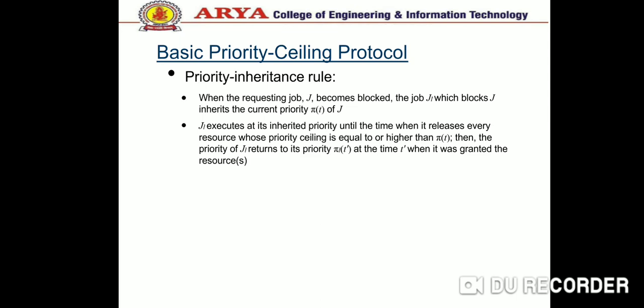The Basic Priority Ceiling Protocol is the same as the Basic Priority Inheritance Protocol except: when a task T requests resource R by executing Lock(R), the request is denied if condition 1 — R is already allocated to T', directly blocking T — or condition 2 — the priority of T is not higher than all priority ceilings of resources allocated to tasks other than T. Otherwise R is allocated to T. When a task blocks others, it inherits the highest of their priorities.